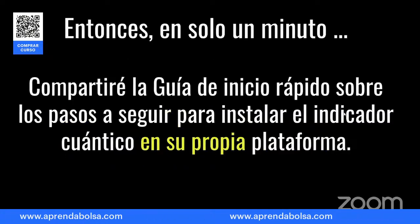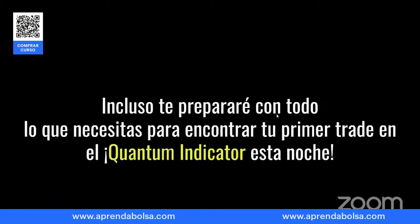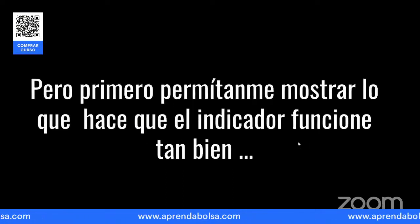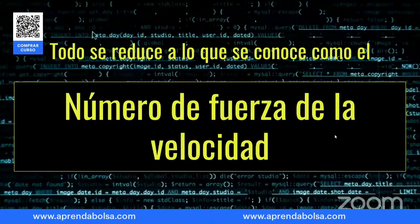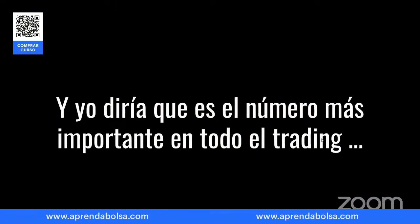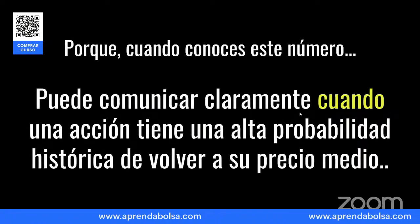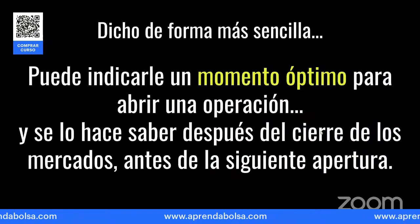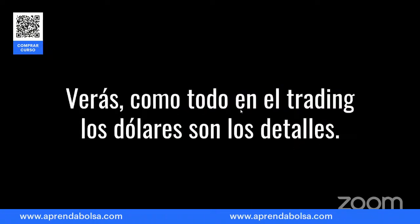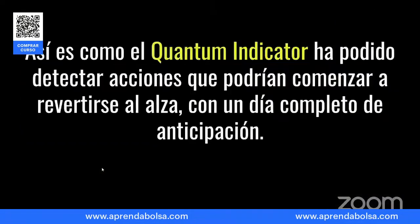Te voy a enseñar cómo puedes iniciar en tu propia plataforma y te preparo con todo lo que necesitas para poner tu primera transacción. Pero primero permítame mostrar lo que hace funcionar el indicador: todo se reduce a lo que se llama el número de fuerza de velocidad. Yo diría que es el número más importante en todo el trading, porque cuando conoces este número puedes identificar claramente cuándo la acción tiene la mayor probabilidad de empezar su movimiento. Lo óptimo para abrir una transacción es cuando se pone undervalue — ahí es cuando el indicador detecta estas acciones que podrían comenzar a subir.